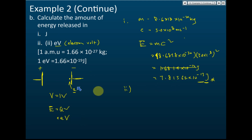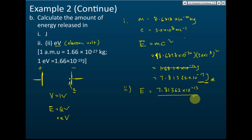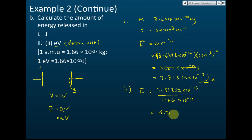To convert to electron volts: take the energy 7.8136 times 10 to the power of negative 13 joules, and divide by 1.66 times 10 to the power of negative 19 joules per eV. The answer is 4.707 times 10 to the power of 6 eV. Those are the basics of calculations related to AMU and kg conversions, and joules and electron volts — we must be familiar with all these units of energy and mass.